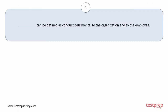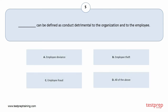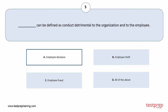Question number 5. [Blank] can be defined as conduct detrimental to the organization and to the employee. Your options are A. Employee deviance, B. Employee theft, C. Employee fraud, D. All of the above. The correct answer is option A.